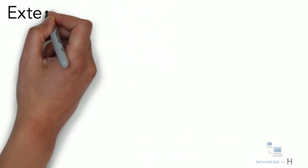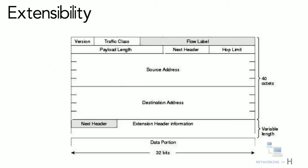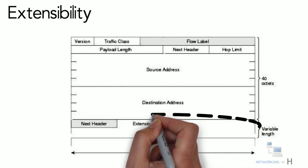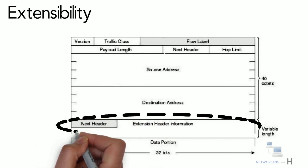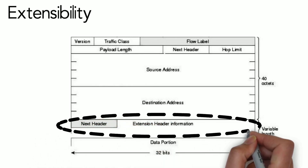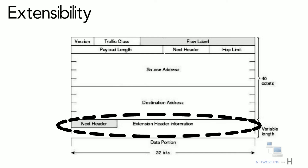The last feature is extensibility. One of the major advantages of the IPv6 header is that it is extensible to add more information in the options part. IPv6 options are placed in separate extension headers located between the IPv6 header and the transport layer header in a packet. IPv4 provides only 40 bytes for options, whereas options in IPv6 can be as large as the IPv6 packet itself.